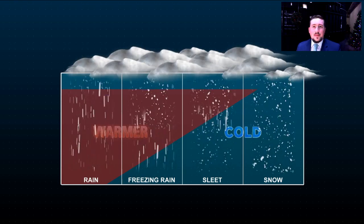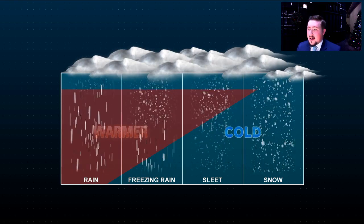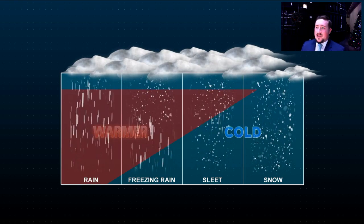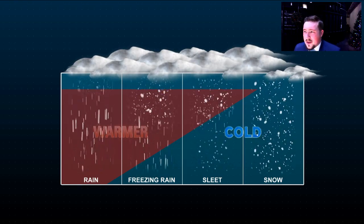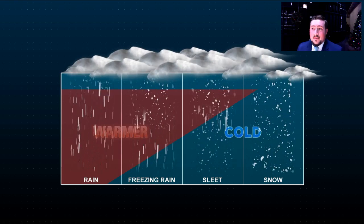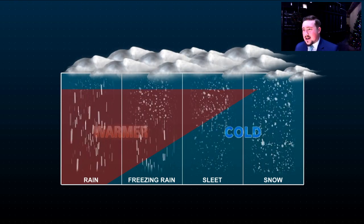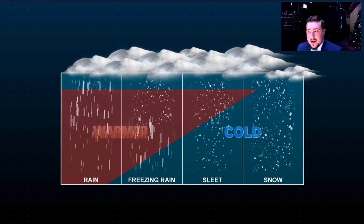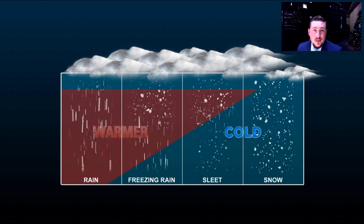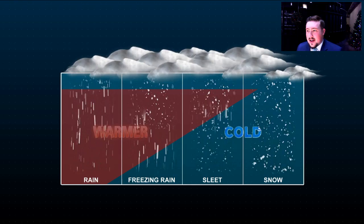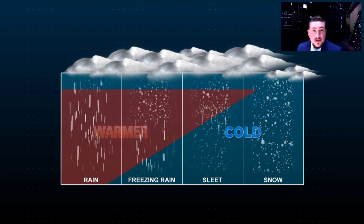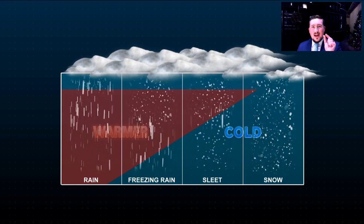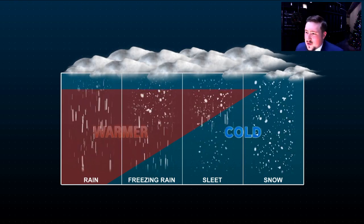Let's start off with the types of wintry precipitation that we get. Sleet is one of them. Basically the idea is that we have a shallow layer of warm air that's enough to melt those snowflakes coming out of the clouds, but then below that shallow warm layer there's a much deeper layer of freezing air. Those raindrops actually start to freeze as they are falling, and they become these tiny little ice pellets. That is what sleet is.